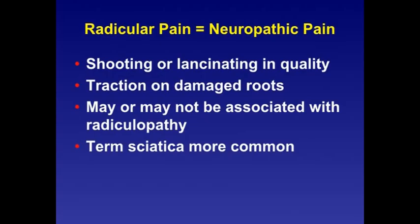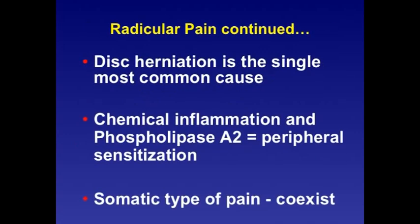The differentiation of radicular pain: characteristics typically include shooting or lancinating pain caused by distraction and damaged nerve roots. This may or may not be associated with radiculopathy. The term sciatica still exists and is commonly used; it refers to inflammation of the spinal nerve root. The most common cause of radicular pain is a disc herniation, which progresses into a chemical inflammation, release of phospholipase A2, and peripheral sensitization.